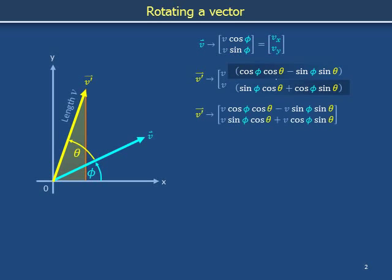Multiply the number v distributively. Recognize v cos phi as vx and recognize v sin phi as vy. Switch the order of the terms in the bottom component so that the term with vx appears first.